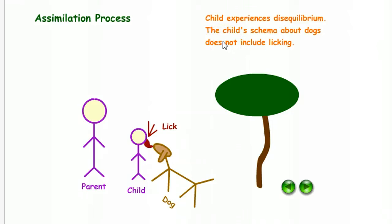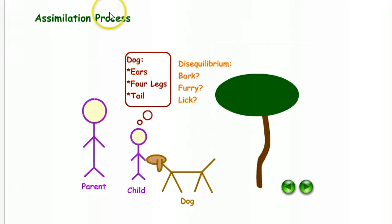Then the child is licked by the dog. The child experiences disequilibrium. The child's schema about dogs does not include licking. So as part of this assimilation process, the child is in an experience of disequilibrium. Here is this animal that barks, is furry, and licks.